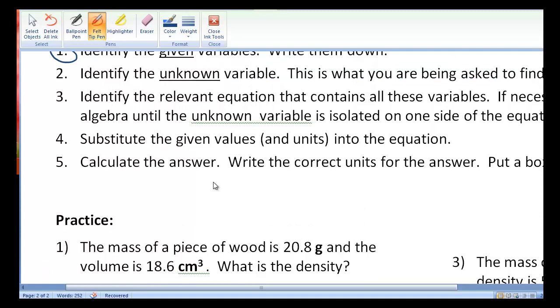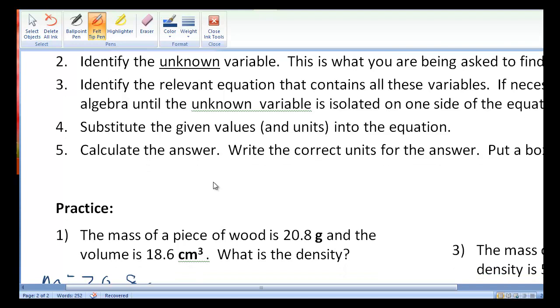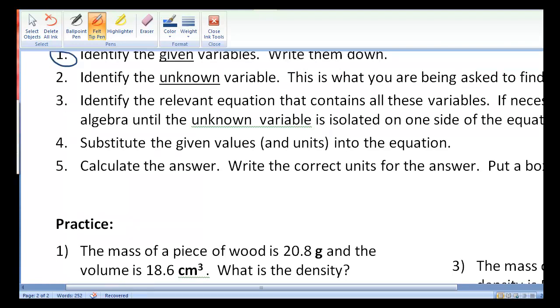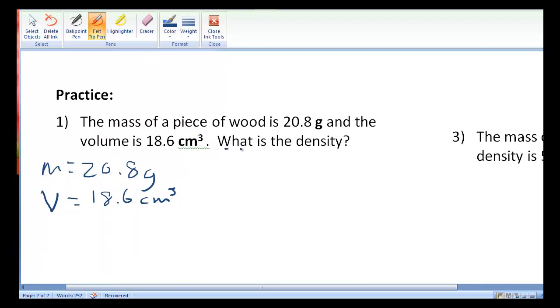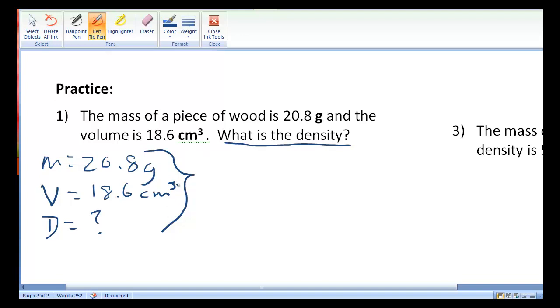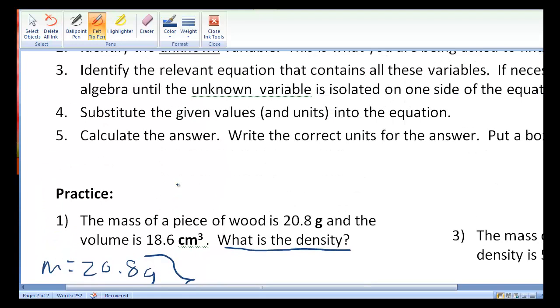Now, step two. Identify the unknown variable. This is what you are being asked to find. Write it down. So, what is the density? That is our big question. Capital D equals question mark. Okay. Now, is there an equation, a known equation, that describes the relationship between these three variables? So, this is now step three. Identify the relevant equation that contains all these variables. If necessary, rearrange using algebra until the unknown variable is isolated on one side of the equation.